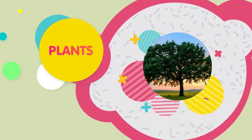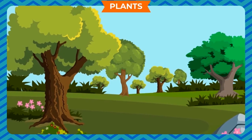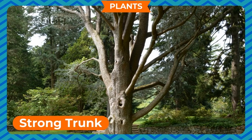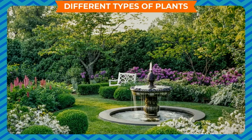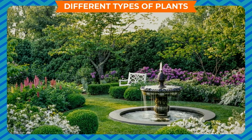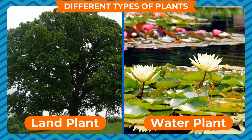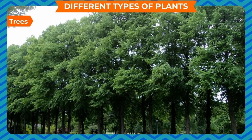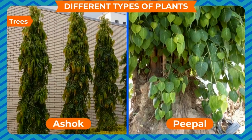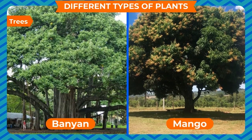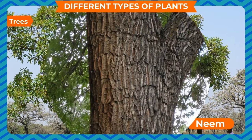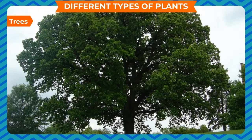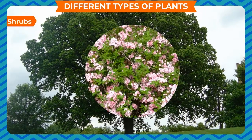PLANTS. Different types of plants are classified based on the thickness of their stem. TREES: Some plants such as Gulmohar, Peepal, Ashok, Mango, Banyan, Palm, Neem, etc. have a very strong, thick and woody stem, also known as a trunk. These big plants are called TREES. Trees have many branches and they live for many years.